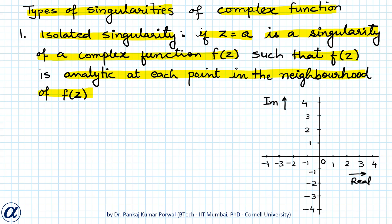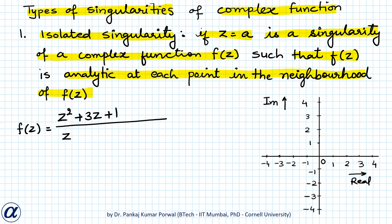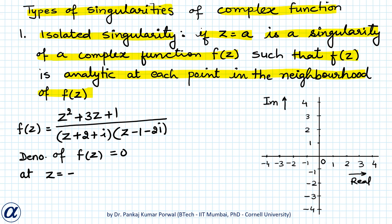In the case of complex numbers, the neighborhood around a point is an open disk with a hole at the center. For example, f(z) equals z squared plus 3z plus 1, divided by (z plus 2 plus i) times (z minus 1 minus 2i). The denominator of f(z) is zero at z equals minus 2 minus i and 1 plus 2i, so these two points are points of singularity of f(z).